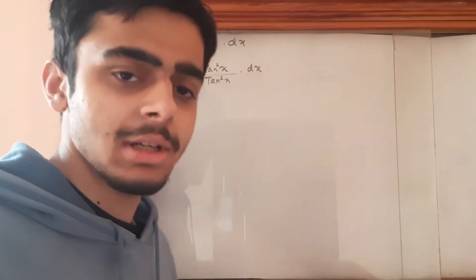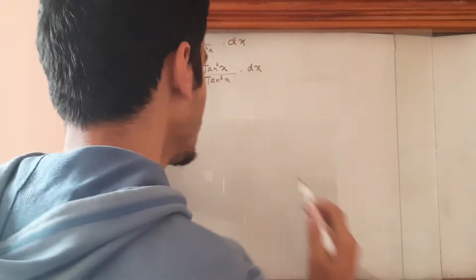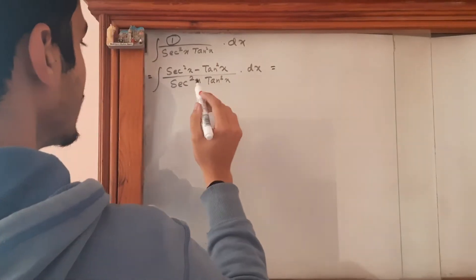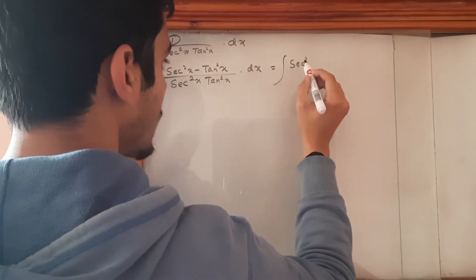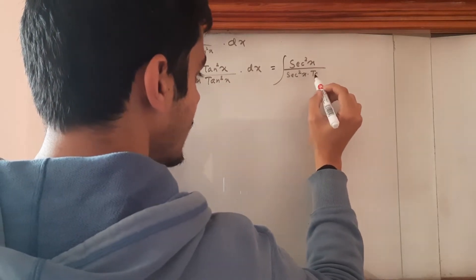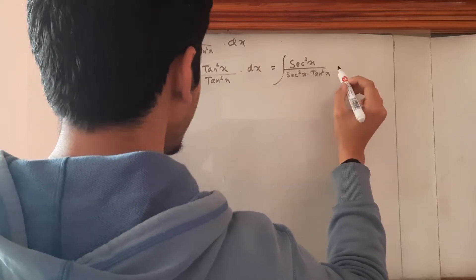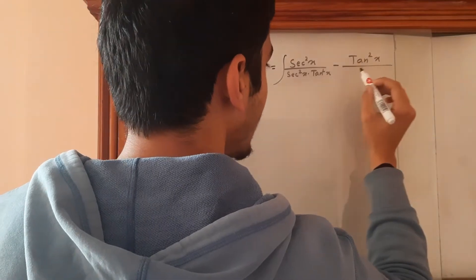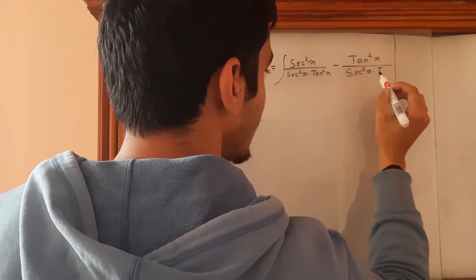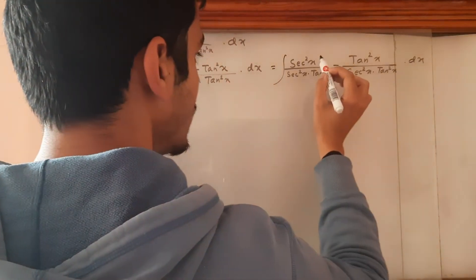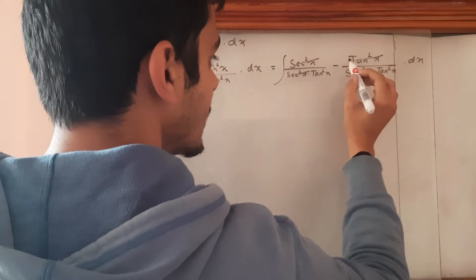In trigonometry there is the relation: sec square x minus tan square x is equal to 1, and that's what we've used here. So we split it as sec square x upon sec square x times tan square x minus tan square x upon sec square x times tan square x dx. Terms cancel accordingly.